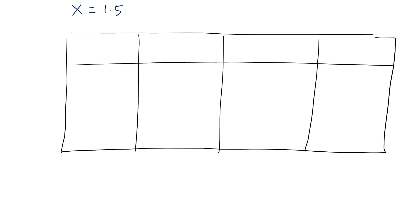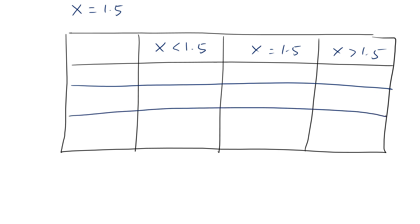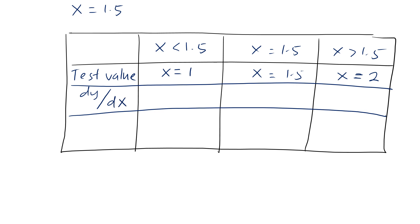When x is equal to 1.5, we consider x less than 1.5, x equal to 1.5, and x greater than 1.5. We take test values: for x less than 1.5, we use x equal to 1, and for x greater than 1.5, we use x equal to 2. Substituting these test values into dy over dx: at x equal to 1 we get a negative number, at x equal to 1.5 we get 0, and at x equal to 2 we get a positive number.